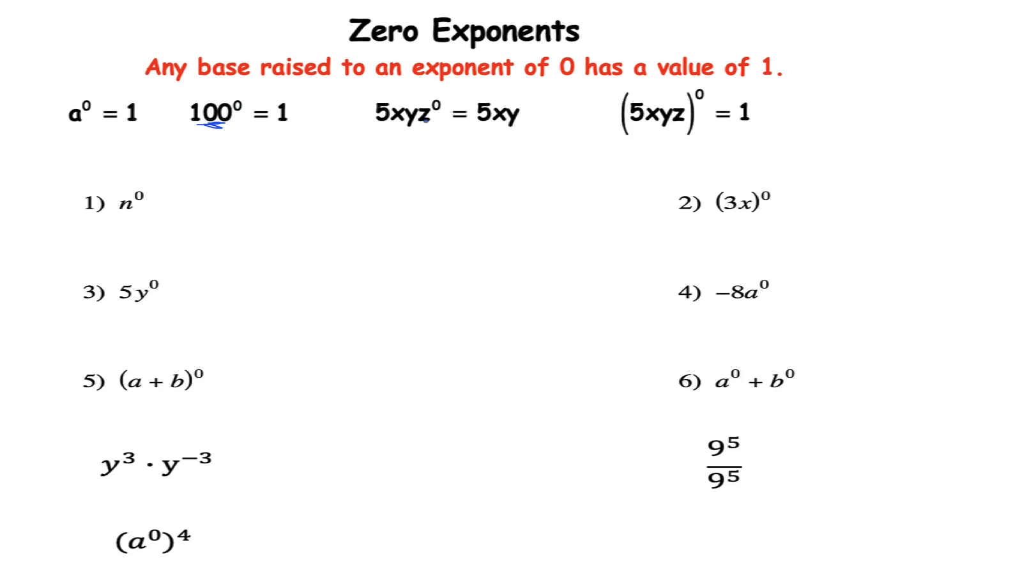Sometimes they include the zero exponent with other terms. So here I have 5xyz raised to the zero. Now the only term here that's raised to the zero exponent is the z. The operation between the 5, the x, the y, and the z to the zero is multiplication. So I would have 5xy and then the z to the zero is 1 and we know 1 times 5xy is just 5xy.